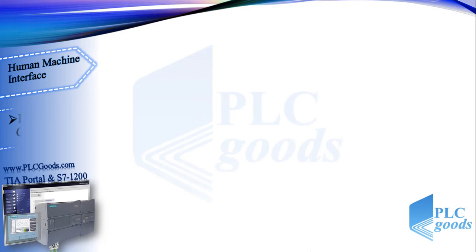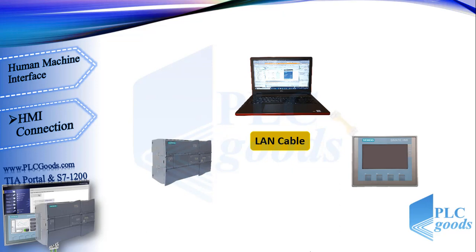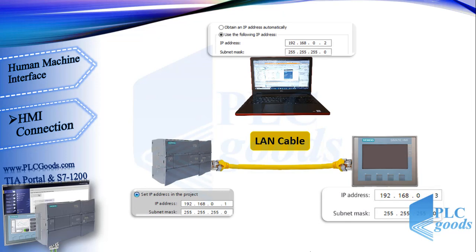Now let's see how to link the PLC with the HMI. We have seen how a Siemens S7-1200 CPU connects to a computer with a LAN cable. Similarly, we can connect the HMI to the computer. Also with a LAN cable, the PLC and HMI can connect together. The base point in a network is IP addresses, which must be different for each device.